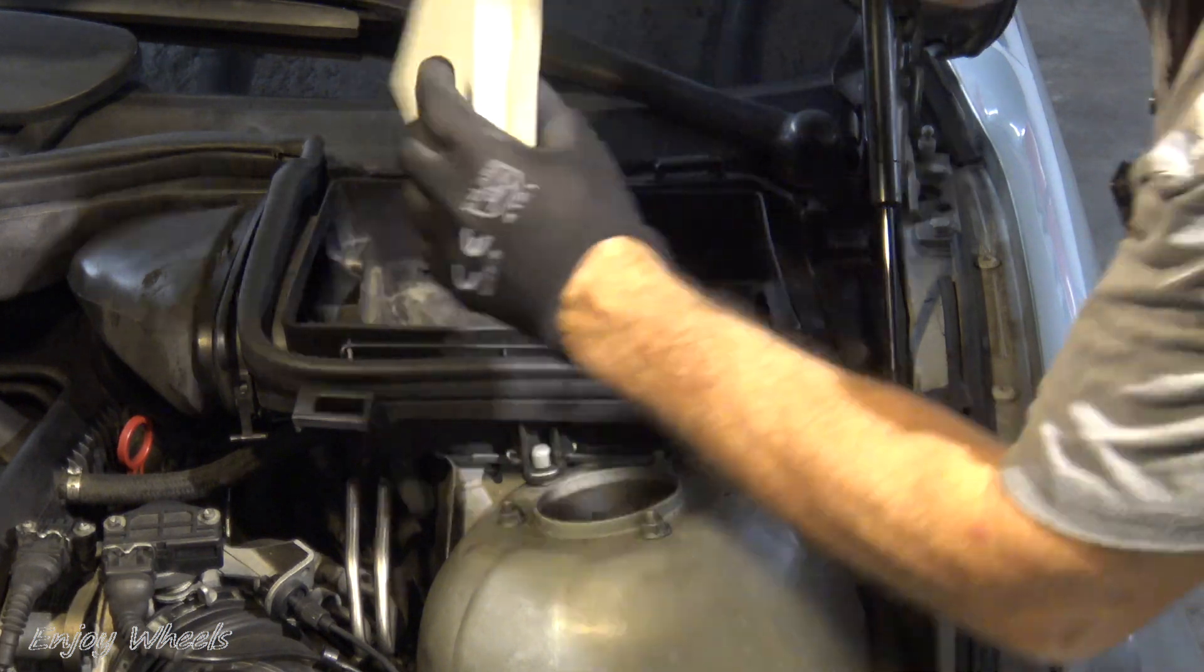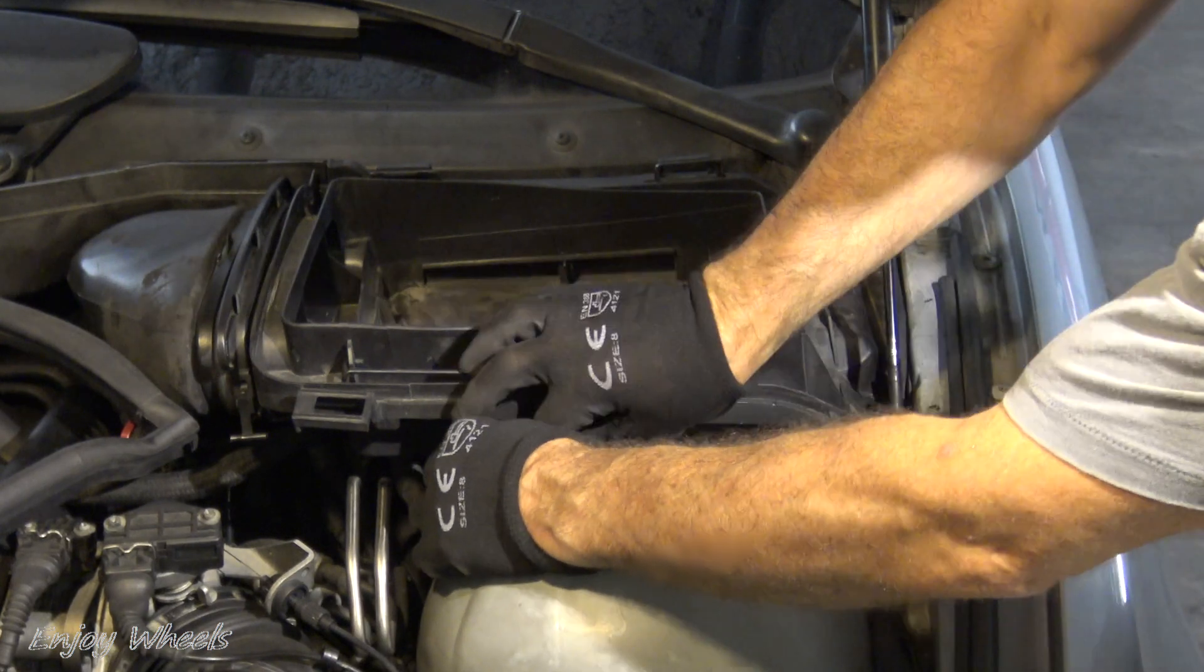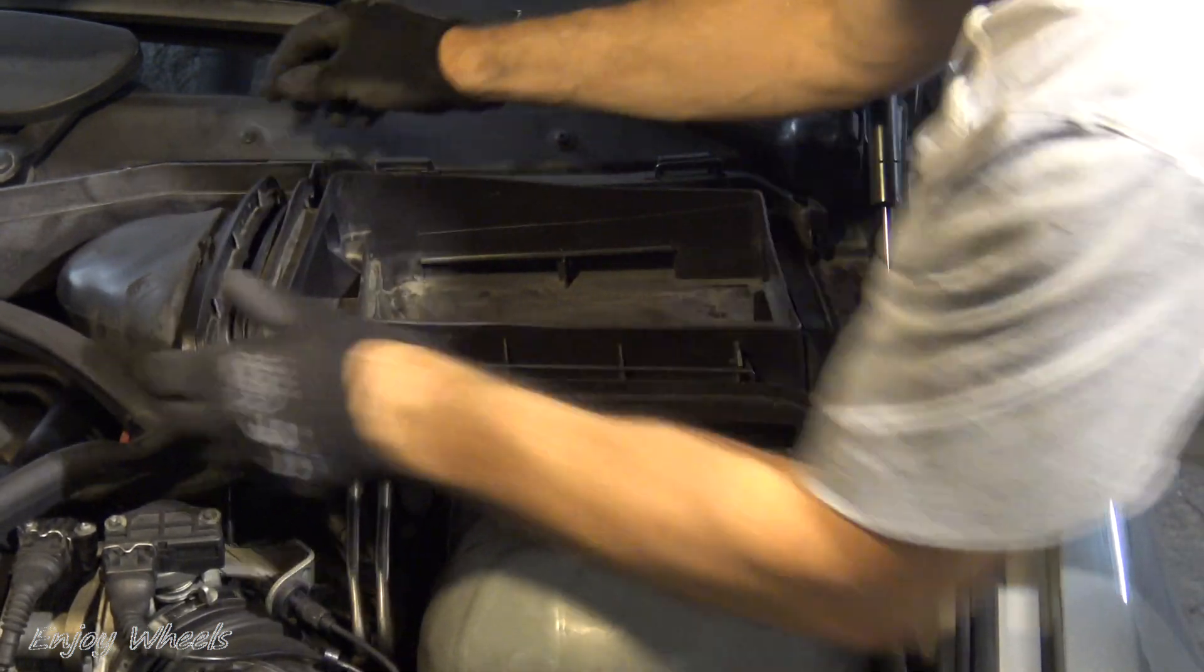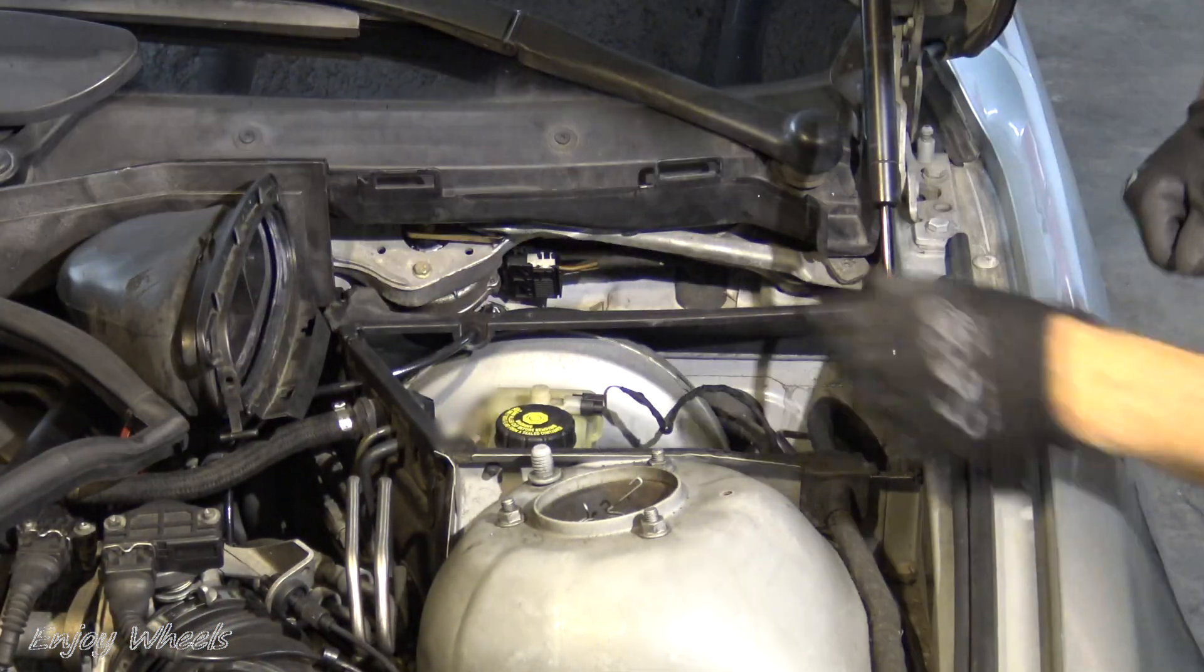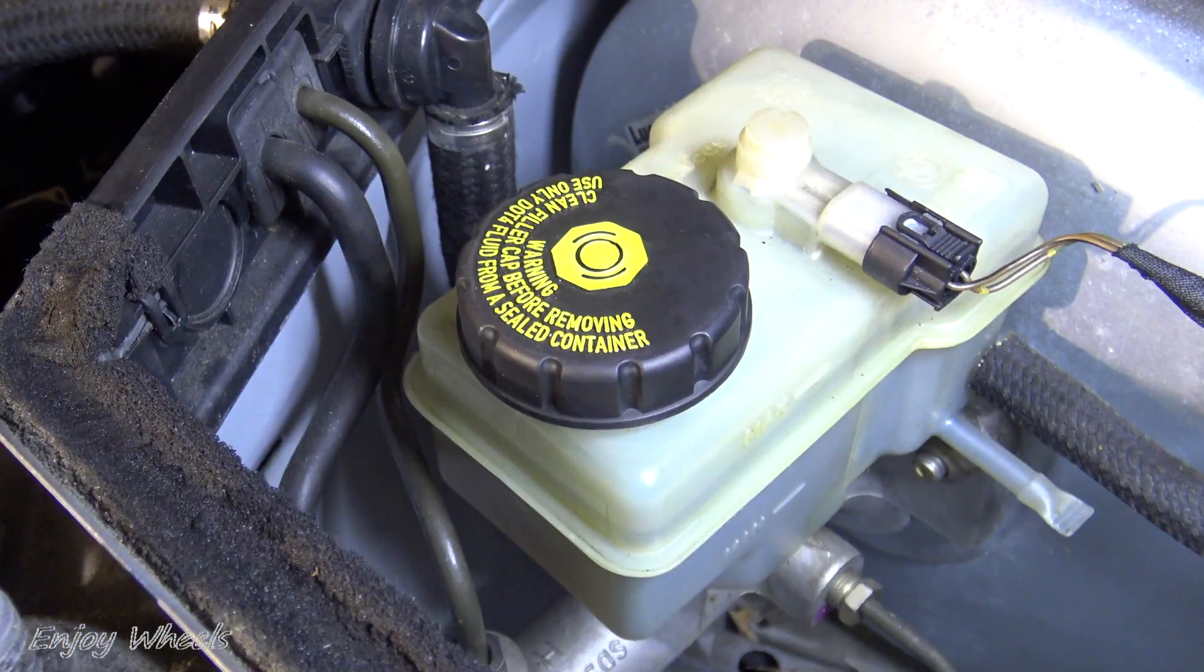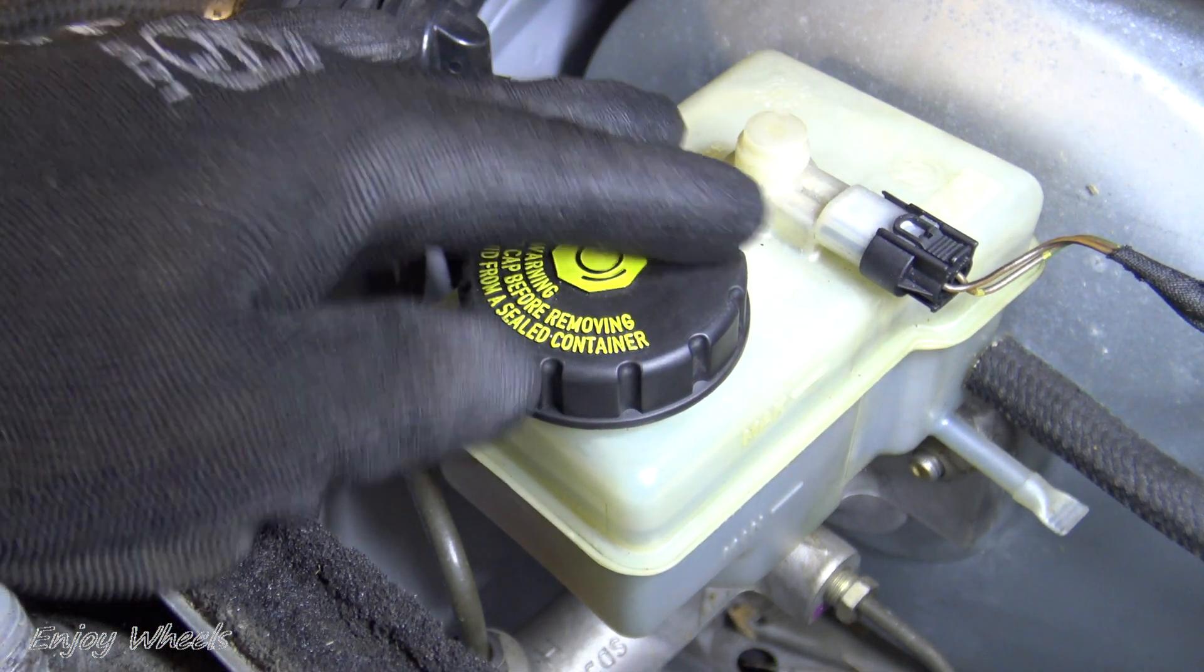I remove the cabin air filter, the engine cover gasket, the small clip, detach the air duct, and pull the plastic piece out. Finally the brake fluid reservoir is here. I can see the level is between the minimum and the maximum, so it's okay.